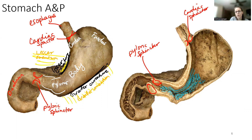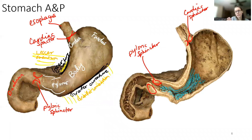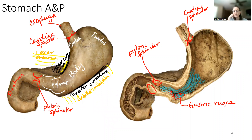Another function of the stomach I forgot is temporary storage of food. So you can temporarily store bolus that comes in here — you want to give food and substances time to mechanically digest and do some chemical digestion before it goes into the duodenum fully. Internally, you have all these ridges and bumps called rugae or gastric rugae. The gastric rugae have two jobs: one is to help with expansion and collapse of the stomach; the other is that as the bolus enters, it bumps up against all these ridges, and that's where mechanical digestion occurs.